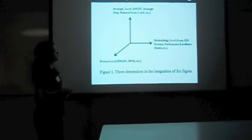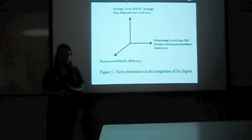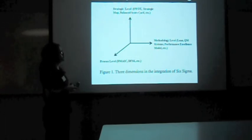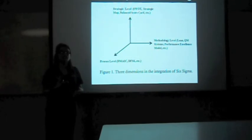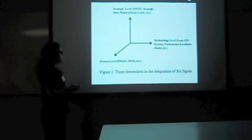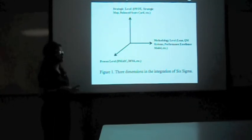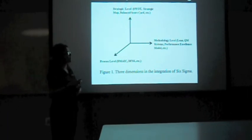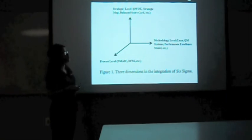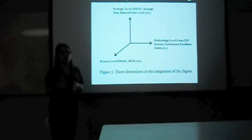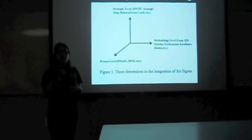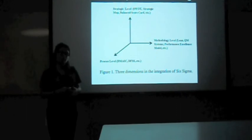This slide shows three different levels that Six Sigma also represents. At the top is the strategic level, known for SWOT analysis, the balanced scorecard, and the different belt levels explained earlier. At the process level, you have the DMAIC and other methods explained. At the methodology level, which is where the future of Six Sigma is headed, different management tools are being implemented to incorporate into Six Sigma going forward.